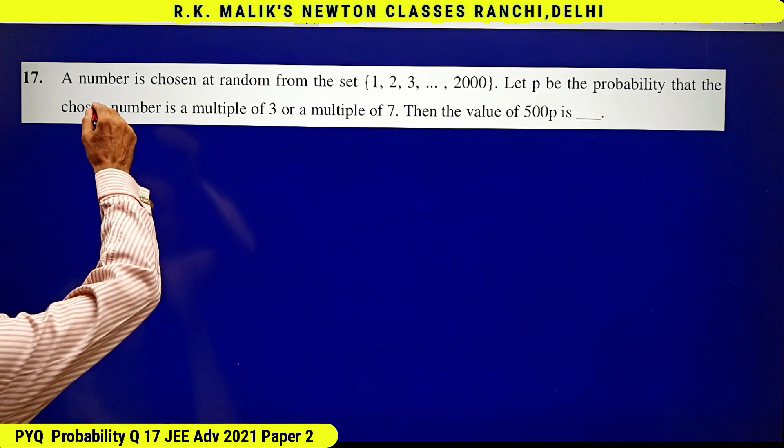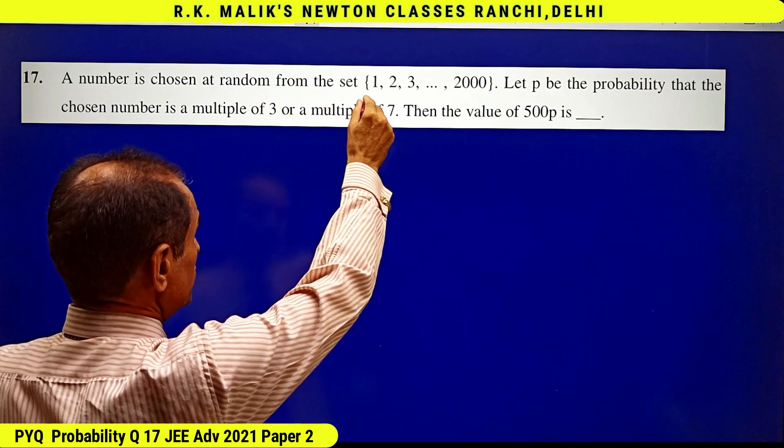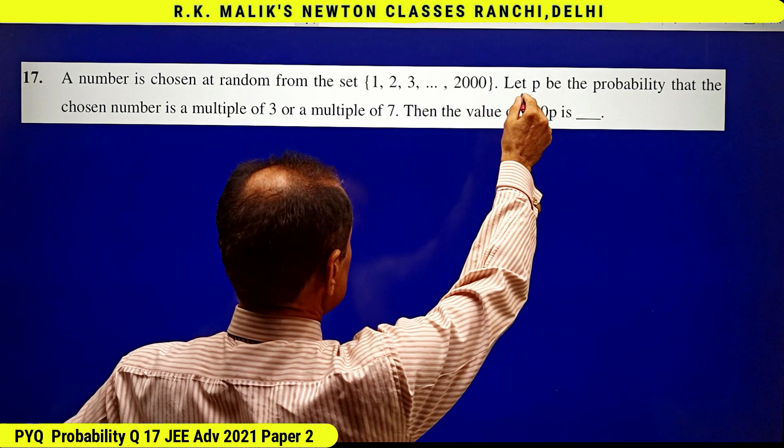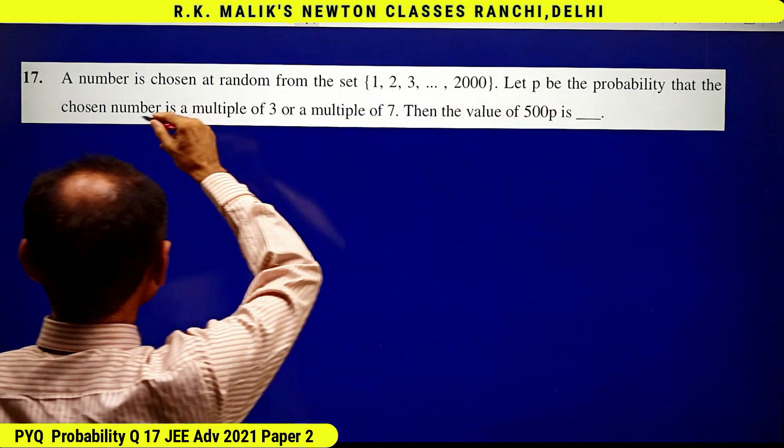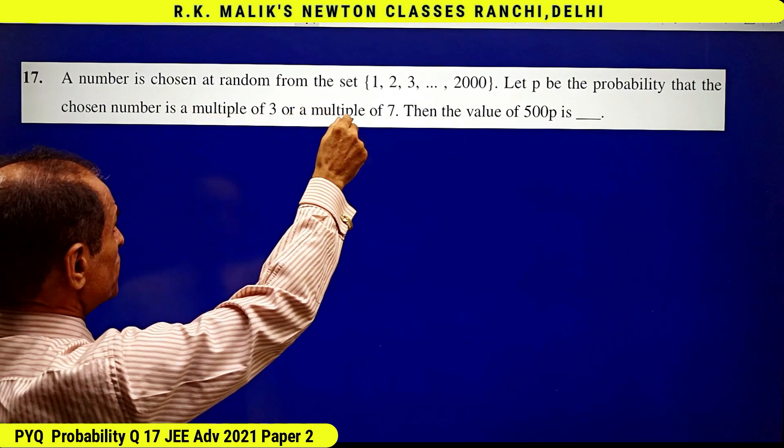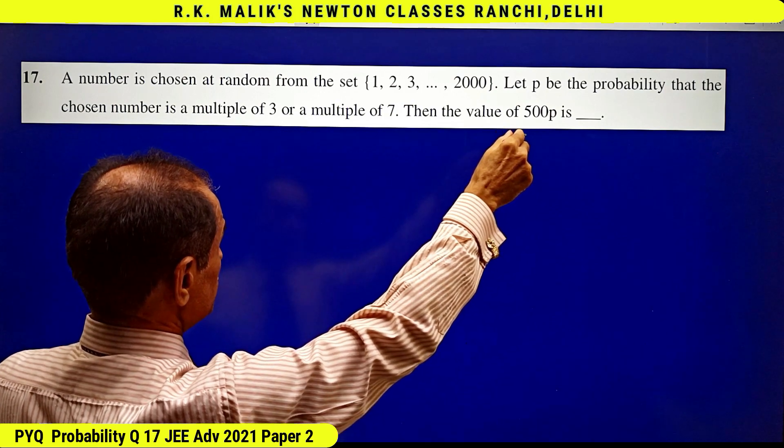In this question it is given that a number is chosen at random from the set containing elements 1, 2, 3 up to 2000. Let p be the probability that the number chosen is a multiple of 3 or a multiple of 7. Then the value of 500p is dash.